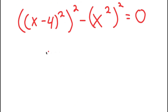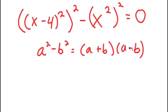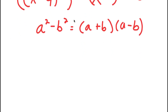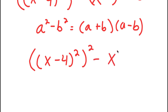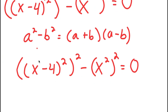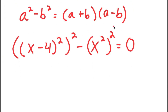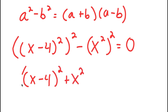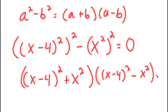From here, I can use the algebraic property that states if I have something in the form a squared minus b squared, this is equal to (a + b)(a − b). In this case, a is (x − 4) squared and b is x squared, so I get [(x − 4)² + x²] times [(x − 4)² − x²] is equal to 0.